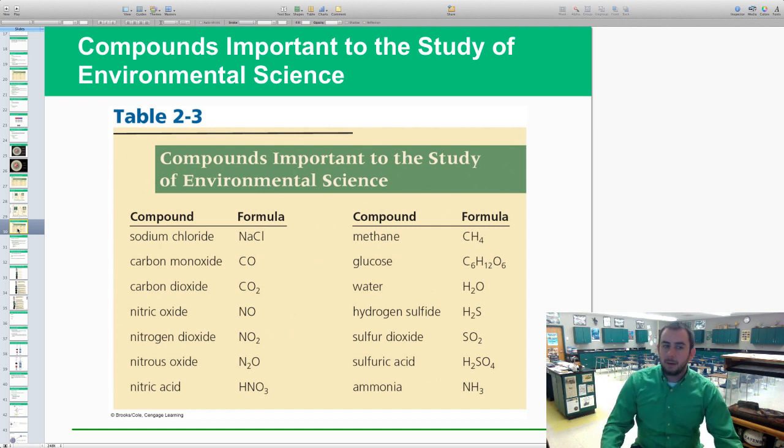Here's some other compounds that are important in environmental science: sodium chloride, carbon dioxide, nitric oxide, nitrous oxide, nitric acid, methane gas, glucose, water, hydrogen sulfide, sulfur dioxide, sulfuric acid, and ammonia. Most of the chemicals that we'll talk about, especially these ones—the carbon cycle, nitrogen cycle, sulfur cycle, ammonia will deal with the nitrogen cycle. Most of these have to do with the cycles, the nutrient cycles. Methane gas is more with the carbon cycle.